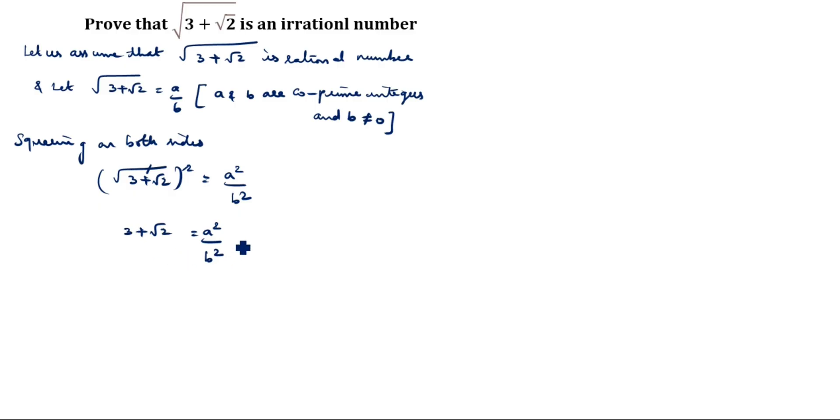Bring this 3 to the other side. Root 2 is equal to a square by b square minus 3. Cross multiply. Root 2 is equal to a square minus 3 b square divided by b square.